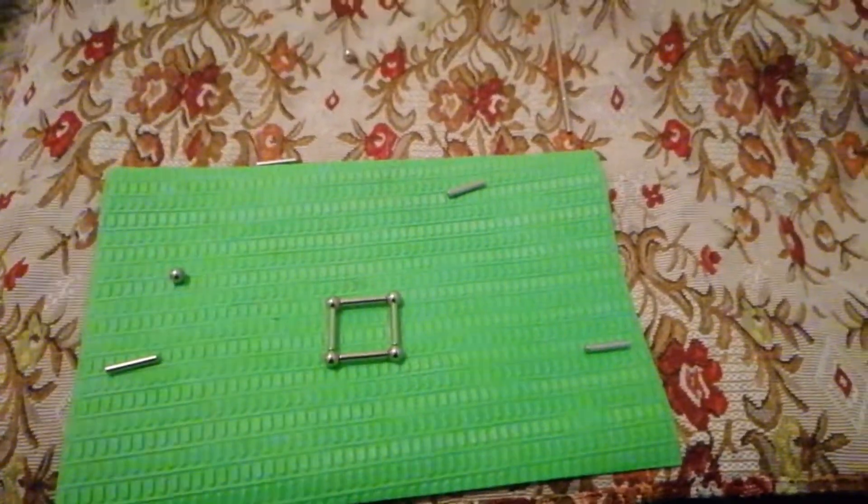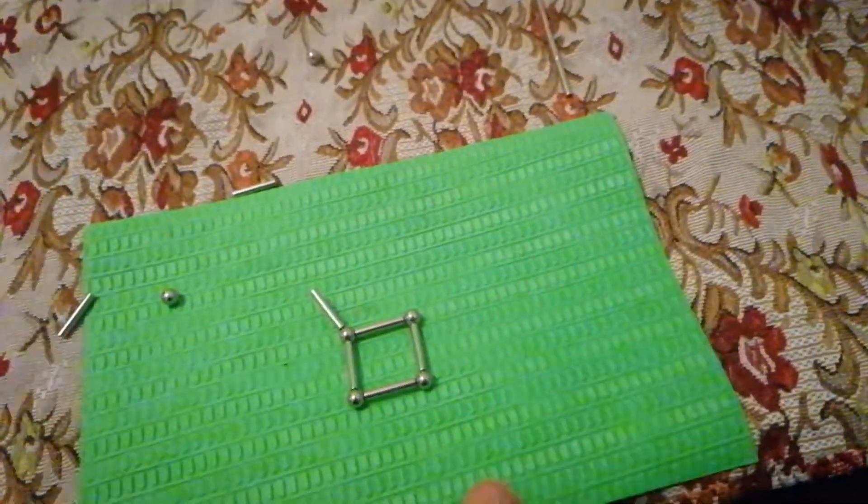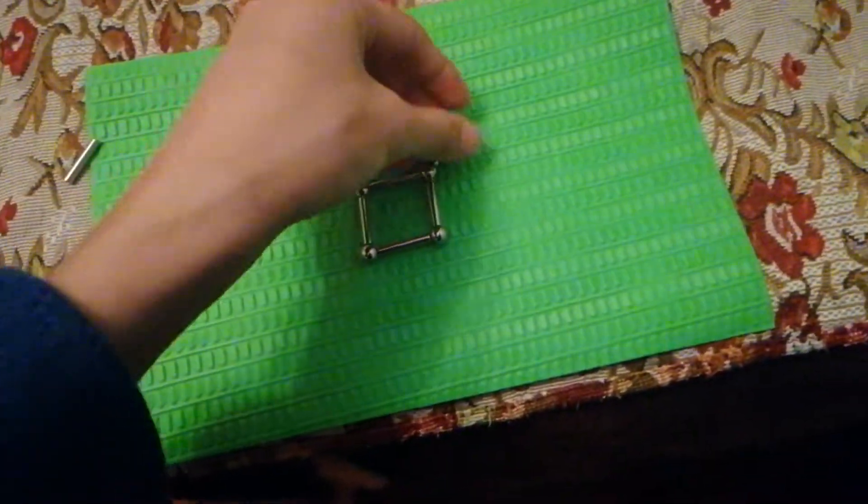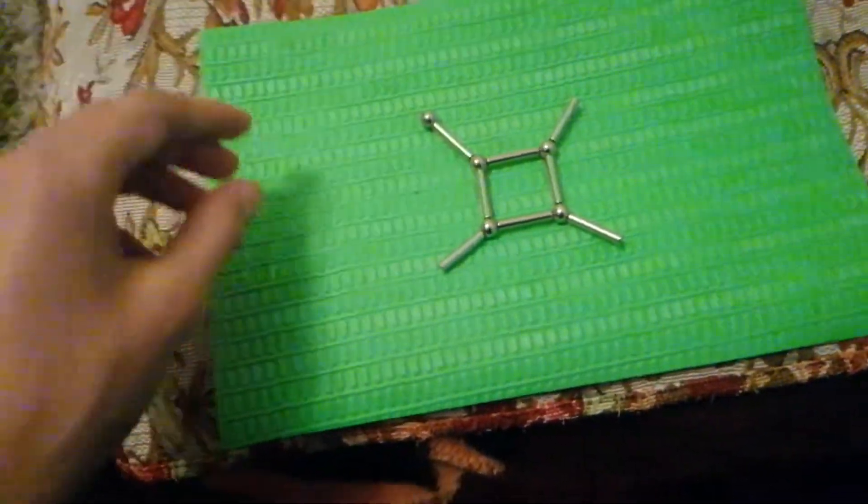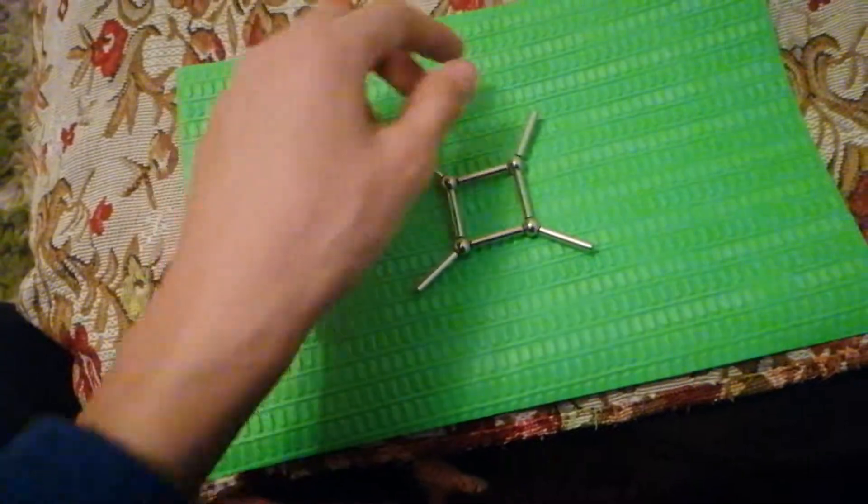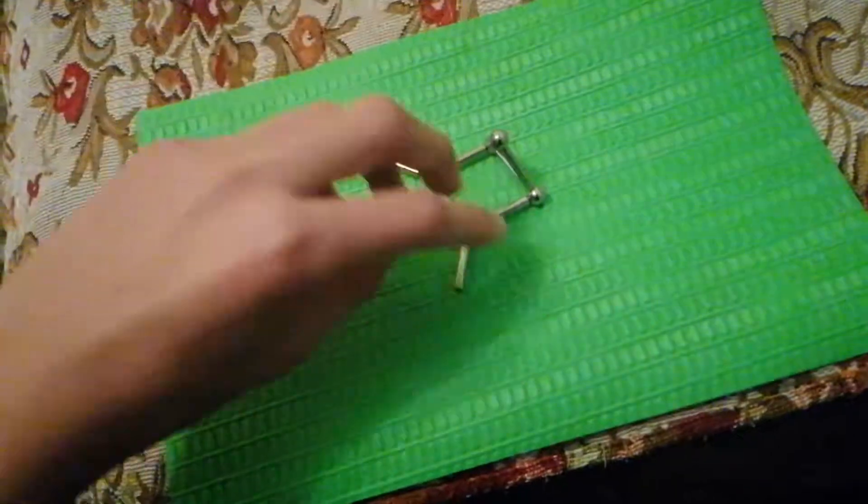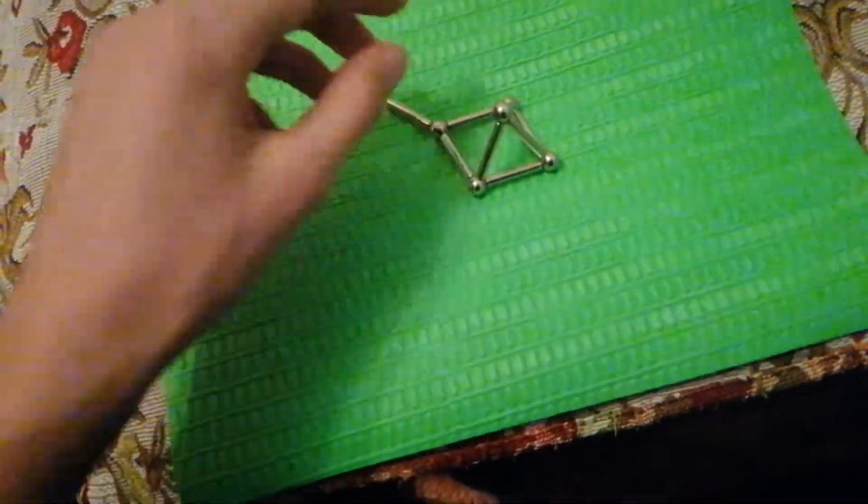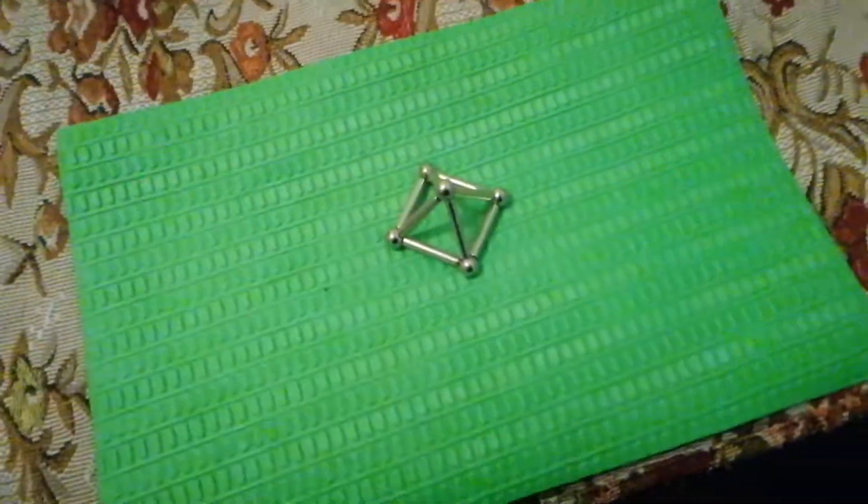Step 2, make a pyramid. Add a rod to one of the square's corners and then repeat for all the corners. And then add a bead and connect all these rods to make a pyramid. Like this. Be very careful. And the last one. And now you have a pyramid.